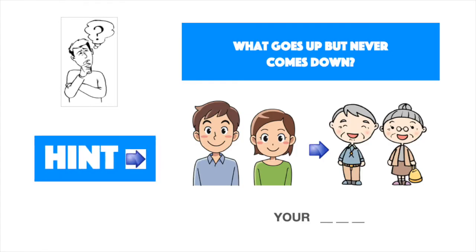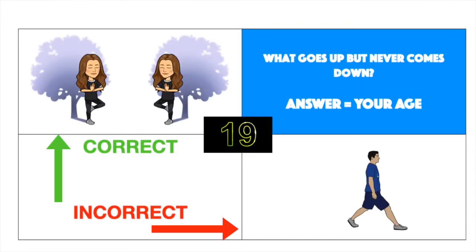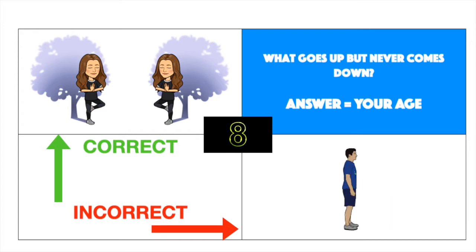What goes up but never comes down. Look at the hints. The answer is your age. If you got it correct, do a tree pose on both sides. If you did not get it correct, do lunges on both sides.